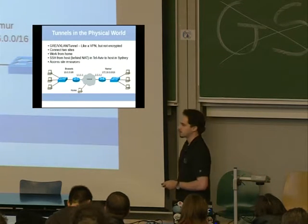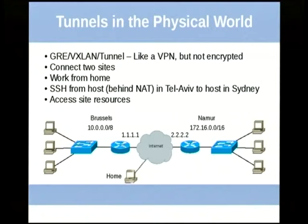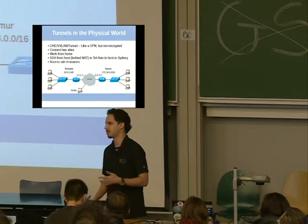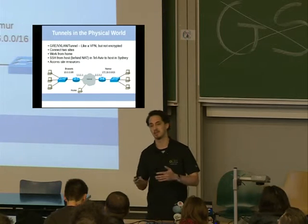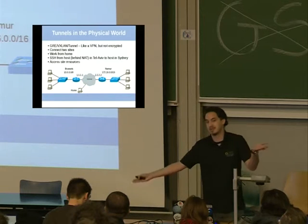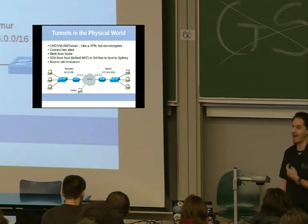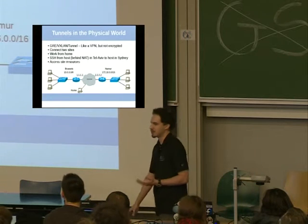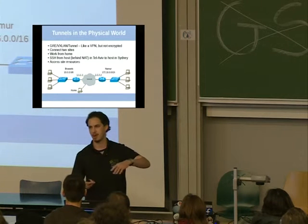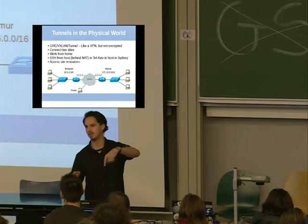So we can do better. Tunnels are a well-known and familiar concept — you know them as VPNs. We all use VPNs to work from home and stuff like that. Tunnels are basically like a VPN but unencrypted. A better way of putting it: a VPN is an encrypted tunnel. I don't care about encryption here. We're only going to be talking about the unencrypted stuff. There are also different types of tunnels — GRE tunnels and VXLAN tunnels — but that's just headers. We're talking about concepts.